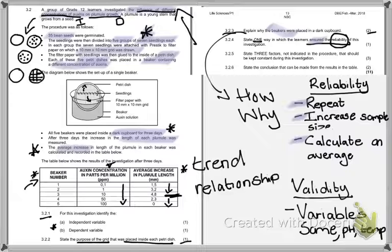Let's look at 3.2.5. State three factors not indicated in the procedure that should be kept constant during this investigation. That means you can't use anything that's already in here. You have to come up with your own. They said this was a bean experiment, but they didn't tell you what kind of bean. They didn't tell us that they used the same beans, so we can write use the same species or the same type of bean. They also didn't tell us the different ages of the beans or that they were all at the same stage of growth. They never mentioned environmental conditions like the same amount of water or the same pH. It's a state answer, so it's just one word answers or phrases.